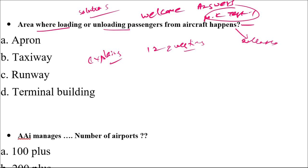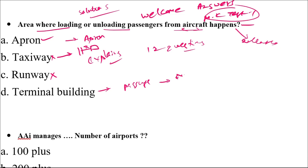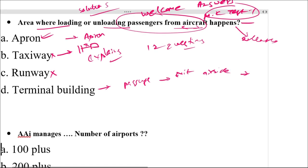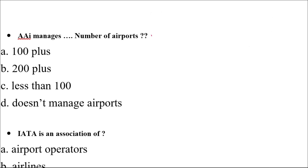The area where landing, loading, or unloading of passengers from aircraft happens — the correct answer is apron. Apron is the standard definition for this area. Taxiway connects the runway and apron, so passengers don't access it. The runway is also not accessed by passengers. Terminal building is where passengers enter the airport and exit to the airside to board the aircraft. Since loading and unloading happens from the aircraft, the correct answer is apron.